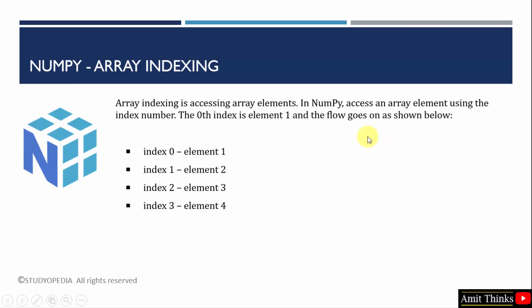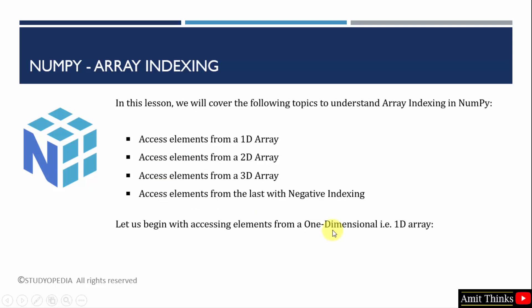You can access array elements using the index number. For the first element, go for the zero index. For the second element, you need to use the first index — in this way the flow goes on. In this lesson, we will cover all the major arrays: how to access elements from a 1D, 2D, or 3D array, and an important concept — how to access elements from the last with negative indexing.